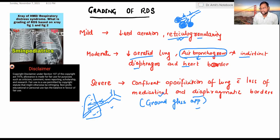You have to understand the meaning of reticulogranularity pattern. Here in this section you can see the reticulogranularity pattern and air bronchogram. Here we have almost indistinct diaphragm and heart border. This is about RDS. You can easily assess the severity of the disease on the basis of X-ray and give surfactant to this child accordingly.